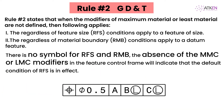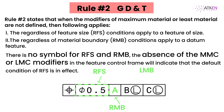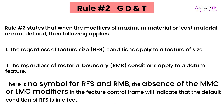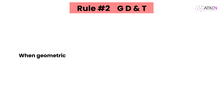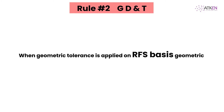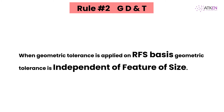In this feature control frame, RFS applies to the tolerance value, RMB applies to datum A, and Least Material Boundary (LMB) applies to datum B and C. Part 2 of Rule 2 is dealt with in the datum system section; here we will focus on Part 1 of Rule 2. When geometric tolerance is applied on an RFS basis, the geometric tolerance is independent of feature of size.